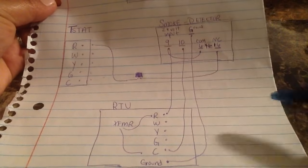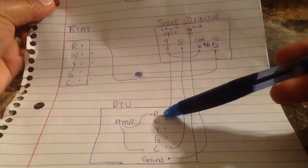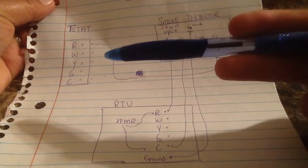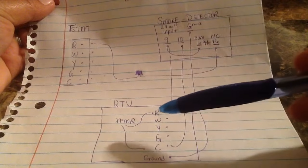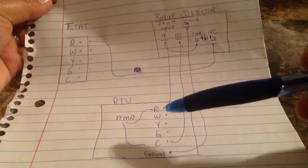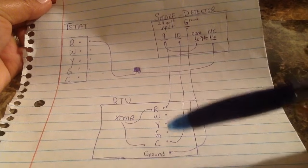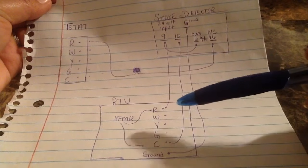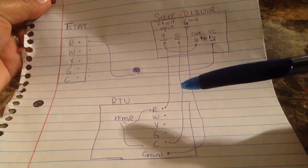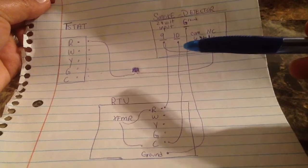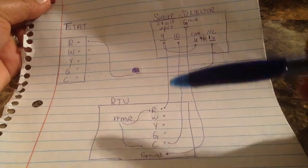So over here we have our rooftop unit, you got your smoke detector and you got your thermostat. Here at the rooftop we have our transformer, our transformer provides 24 volt to R and C. What you're going to do is run an eight wire conductor from the rooftop to the smoke detector. I'm only using four of those wires, the other four stay for spares.